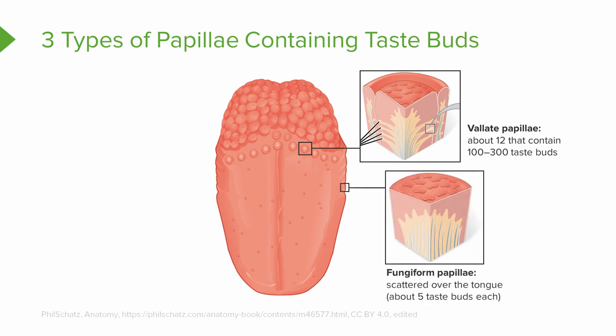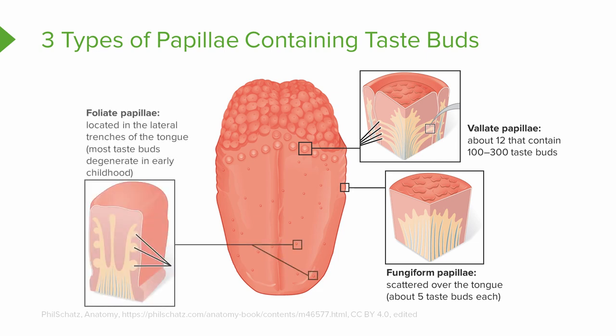The other type of papillae is the fungiform papillae. These are scattered all over the tongue, with about five taste buds each. On the lateral trenches of the tongue, on the sides, we have our folate papillae. These contain taste buds, but most of them are going to degenerate in our early childhood.